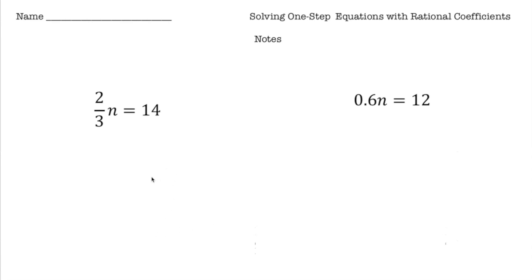So our first problem here is two-thirds n equals 14. And remember, what this means is two-thirds times the number equals 14. So to solve for n, we need to do the opposite of timing, which is dividing. So the way we divide by two-thirds is we multiply by the reciprocal. So let me grab my pen here.